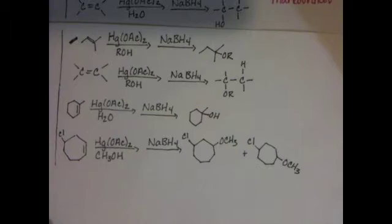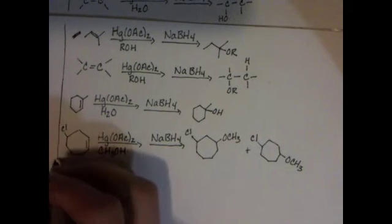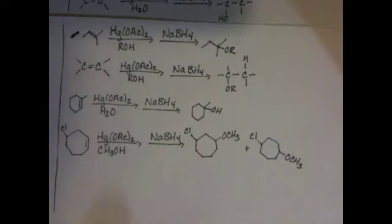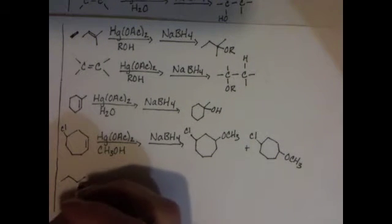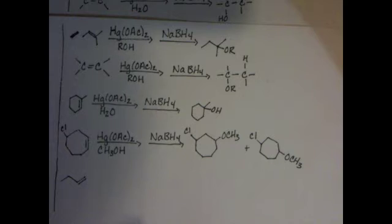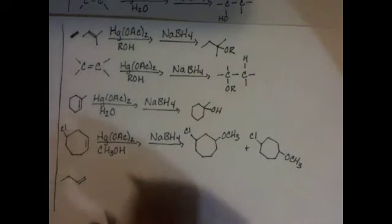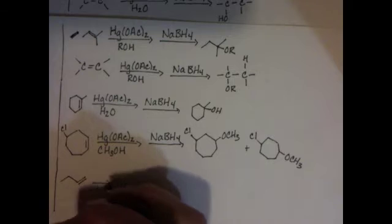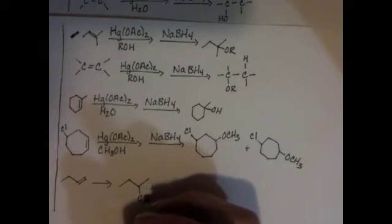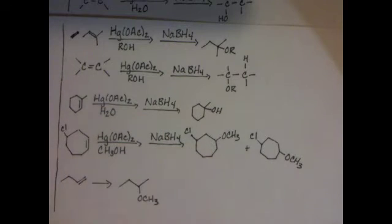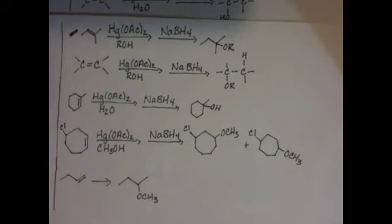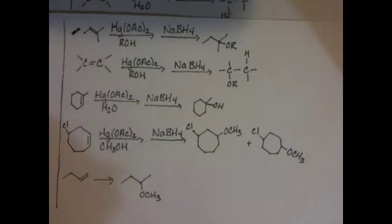Again, that's a pretty straightforward example. Now let's practice doing some predicting the product or predicting the reagent type reactions. So let's take this alkene, 1-butene, and let's convert it to 2-methoxybutane. So you know from this reaction that you can add an OR group, you can add an OCH3 group using the alkoxymercuration-demercuration reagents.